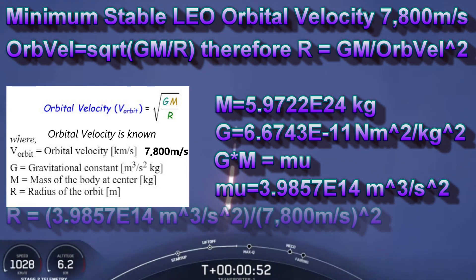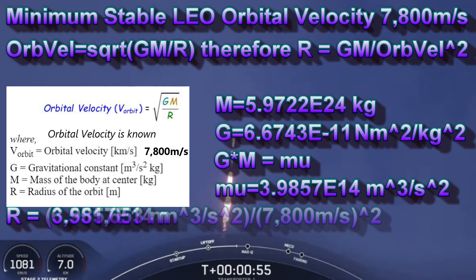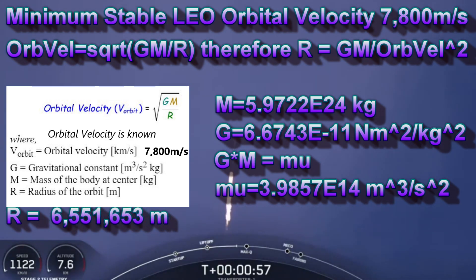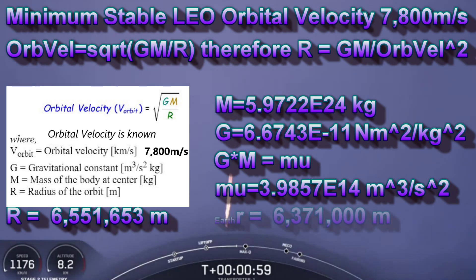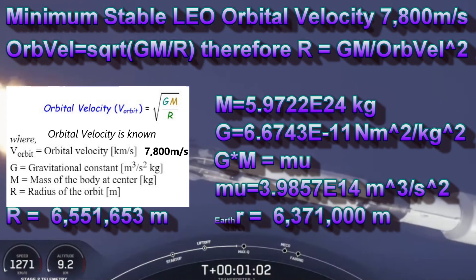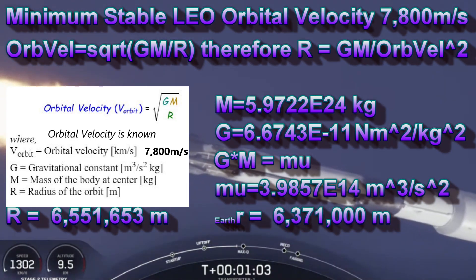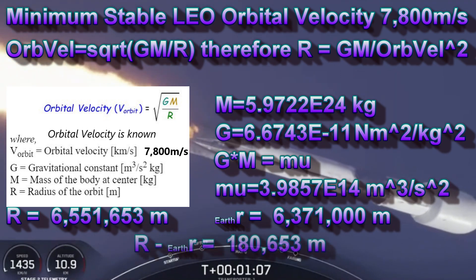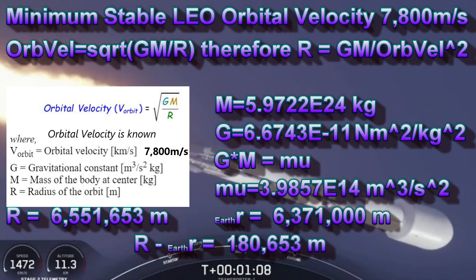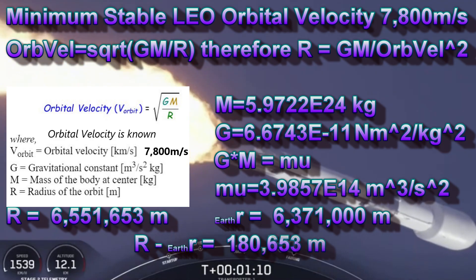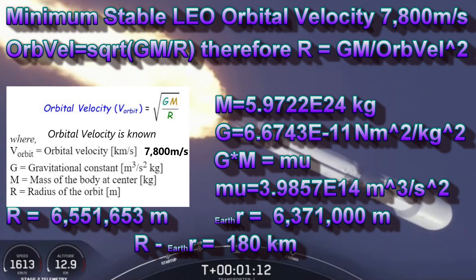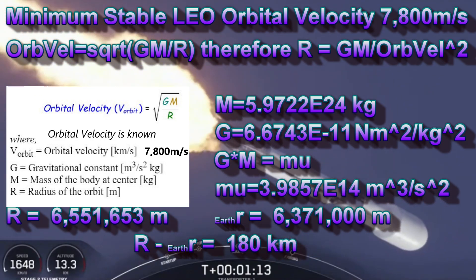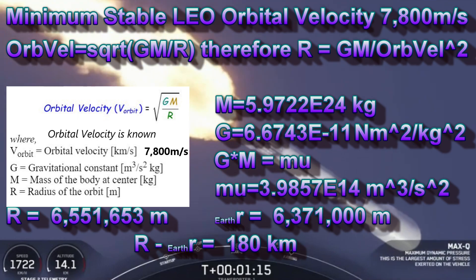Putting this into our calculator, we get a radius of 6,551,653 meters. The Earth has an average radius of about 6,371 kilometers, which is 6,371,000 meters. This gives us an orbital altitude of about 180,653 meters, or about 180 kilometers. This puts us 80 kilometers above the Kármán line.